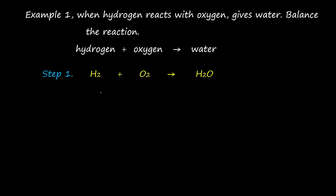Hydrogen is H₂ and oxygen is O₂, because hydrogen and oxygen exist in diatomic form. So write hydrogen as H₂ and oxygen as O₂. The chemical formula for water is H₂O.